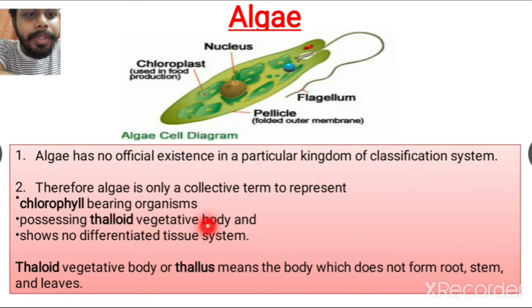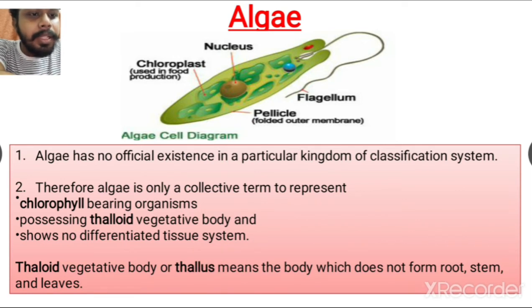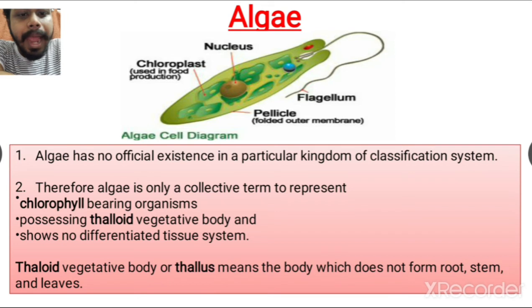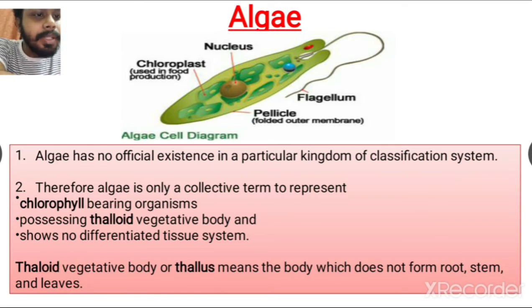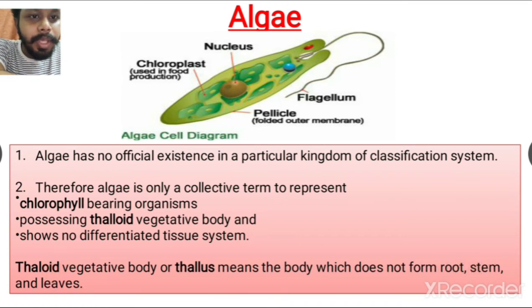The most important feature is that they possess a thalloid vegetative body — meaning the body does not form roots, stems, or leaves like plants. Unlike plants, this thalloid structure of algae has no root, stem, or leaf organization.